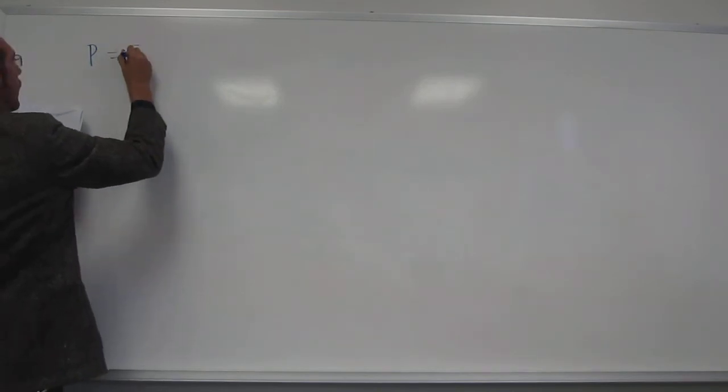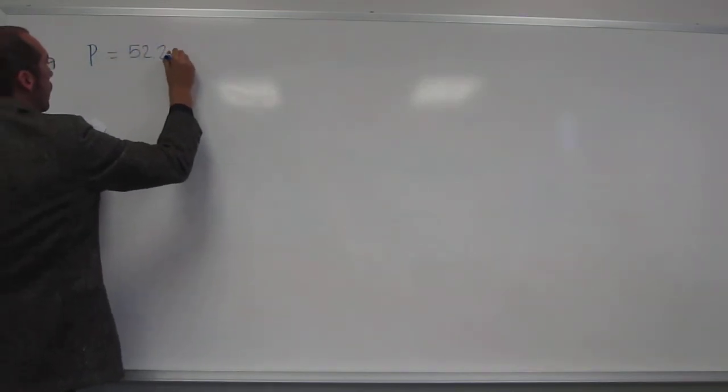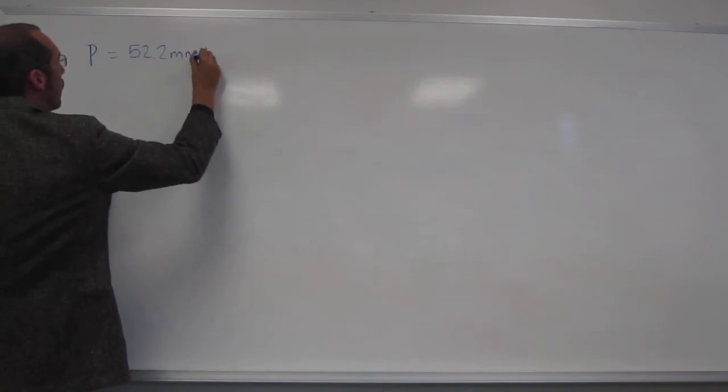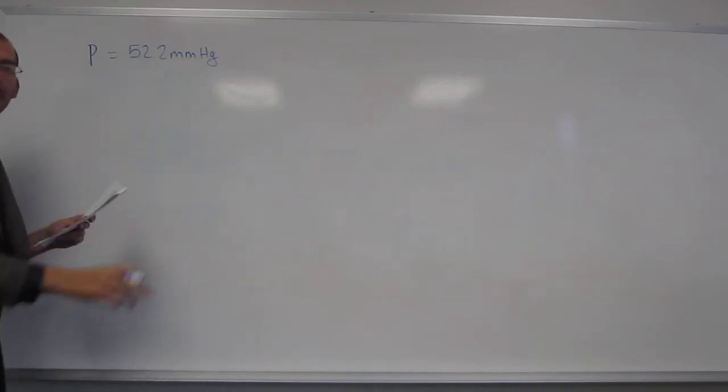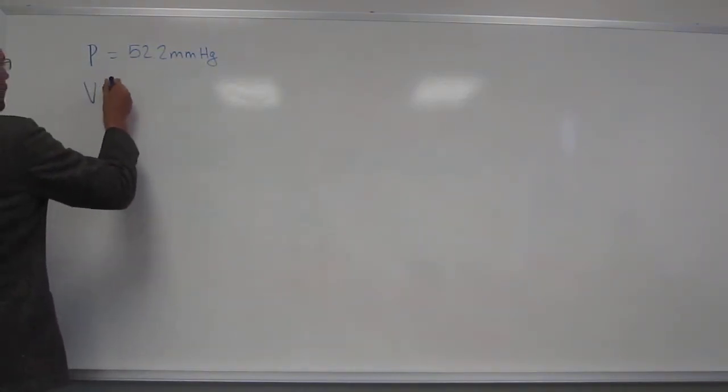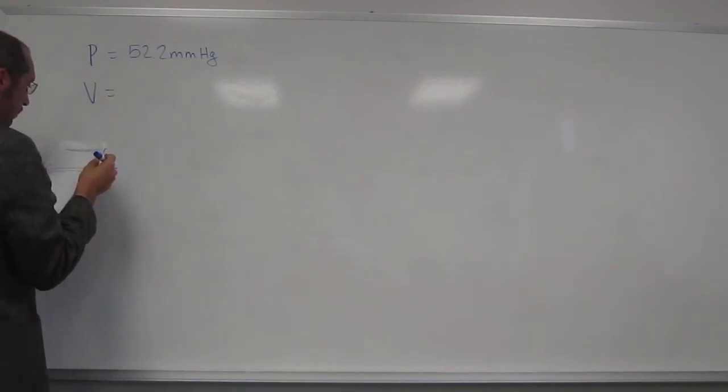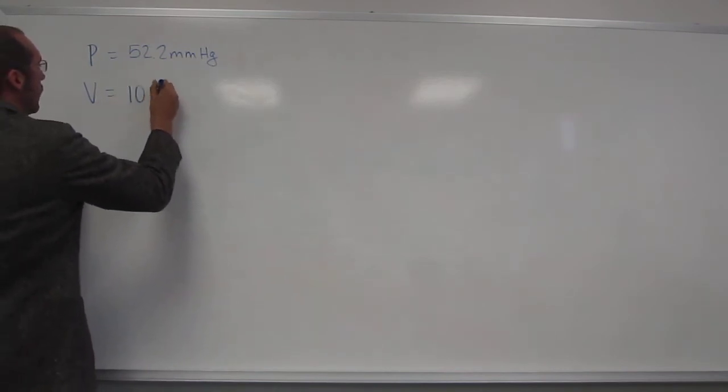So P, well, you got that right, 52.2 millimeters of mercury, but that's not the one that you want to use, right? And R, R is given to you right there, just like in the practice exams. I told you I wasn't going to make you memorize R. So PV, what was V? 10 liters, 10.0 liters.